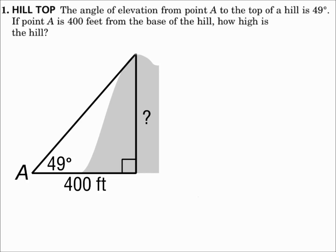Problems involving angle of elevation and angle of depression, since we have right triangles and we're dealing with side lengths and angle measures, we're going to use trigonometry. Number one: the angle of elevation from point A to the top of a hill is 49 degrees. If point A is 400 feet from the base of the hill, how high is the hill?